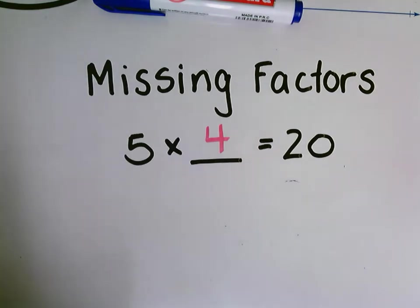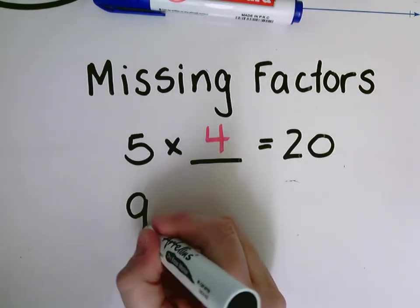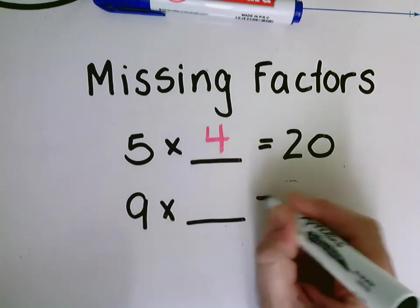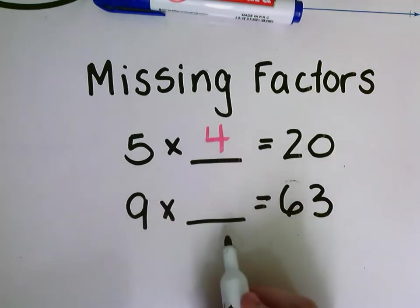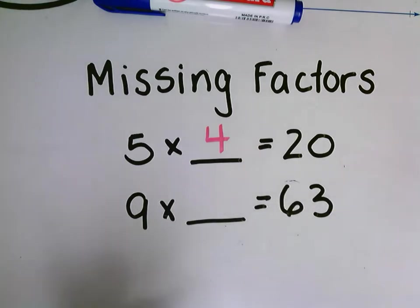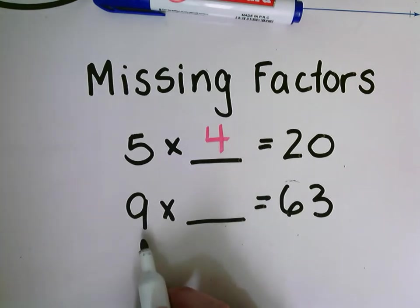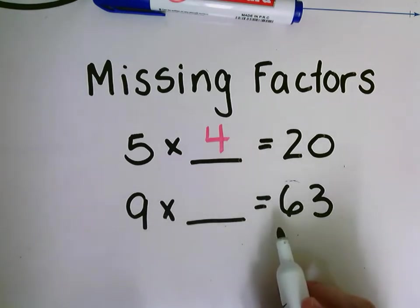Let's try another example. Nine times blank equals 63. I need to think about my nines times tables and think, what do I know that multiplied by nine is going to give me 63 as a product?